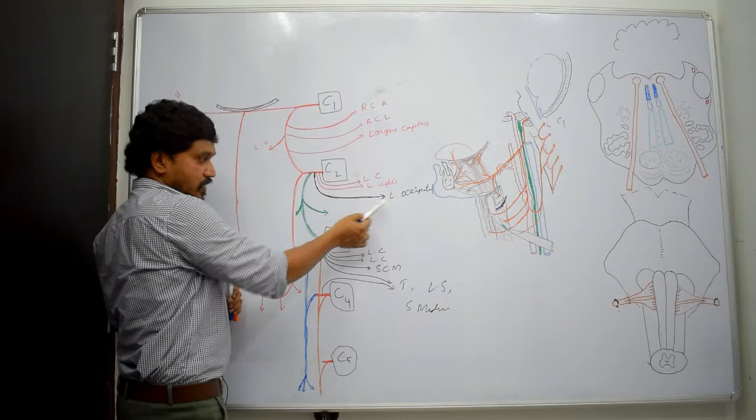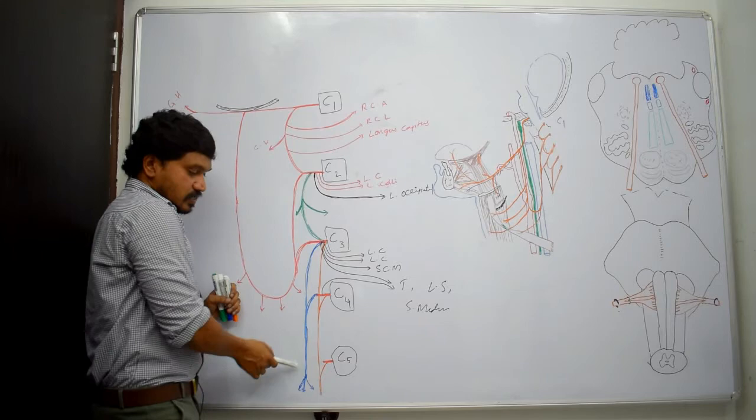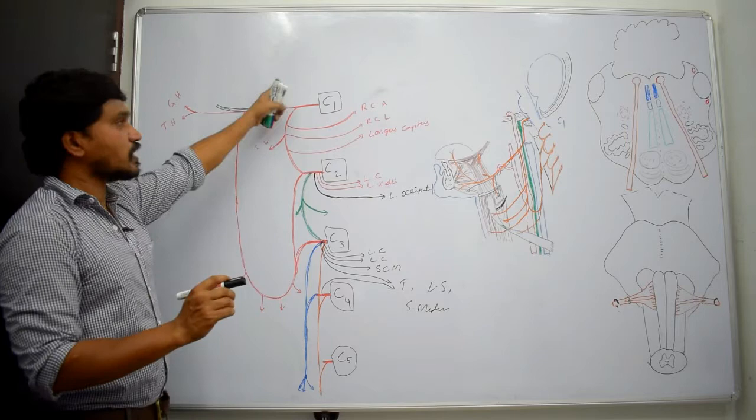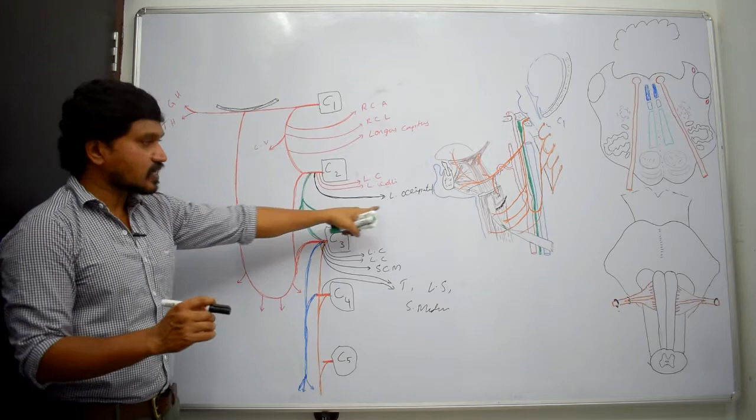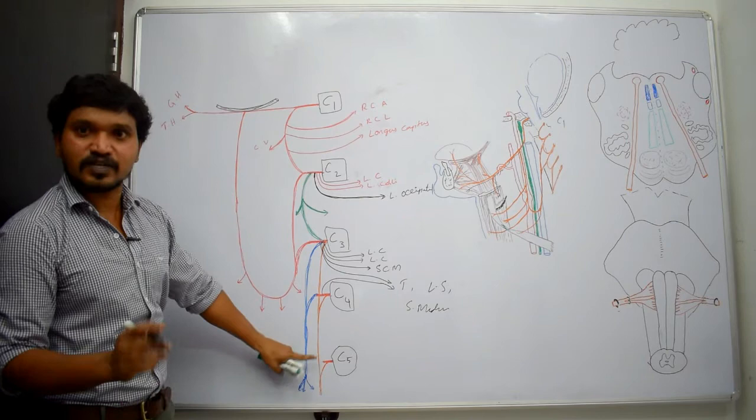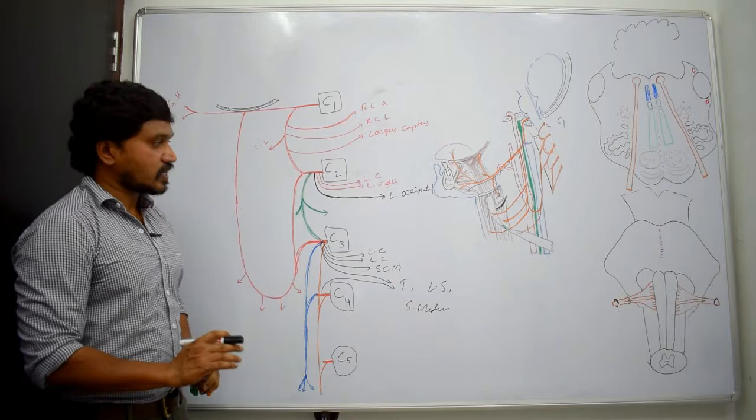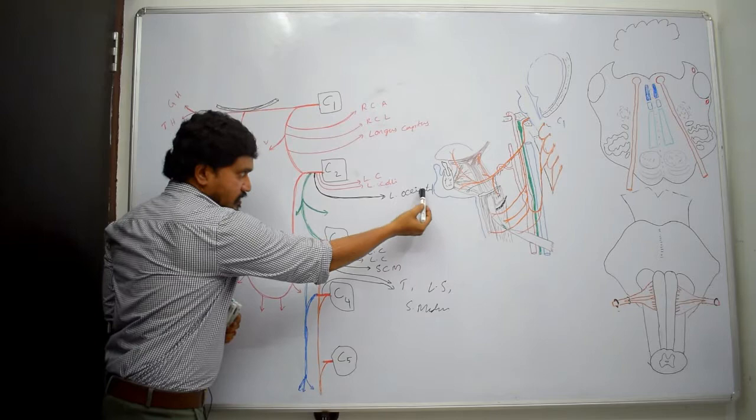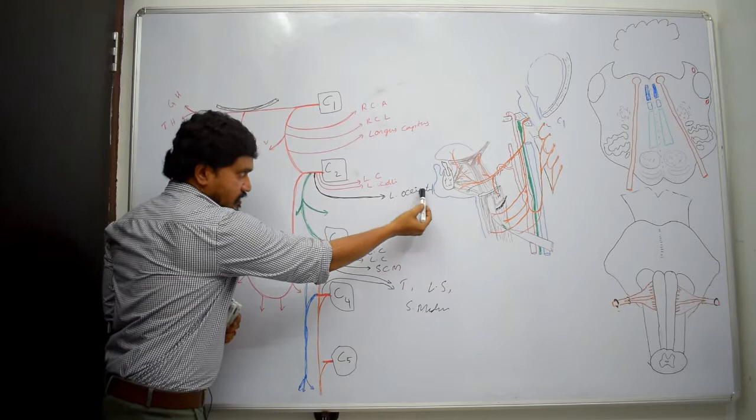So this is the cervical plexus. The sensory nerves are: lesser occipital, great auricular, transverse cervical, and supraclavicular. All remaining branches are motor only, except the phrenic nerve, which is a mixed nerve. When studying the posterior triangle of the neck, you must observe these four cutaneous nerves.